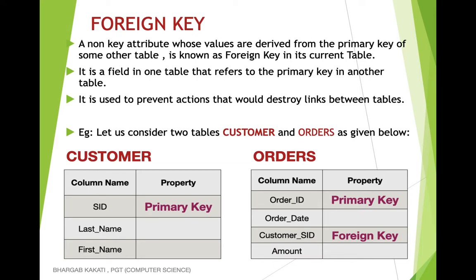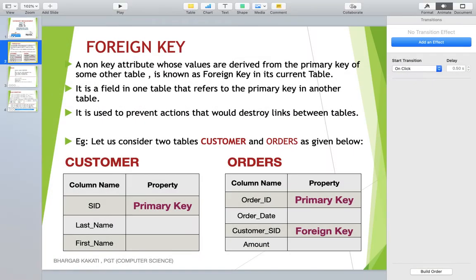The orders table has columns: order ID, order date, customer SID, and amount. Order ID is the primary key of the orders table and customer SID is the foreign key. Since customer SID is the foreign key, it is linked to the SID of the customer table — whatever values we enter for SID in the customer table, the same values should be entered in customer SID of the orders table. Now let us create a database called 'shop' containing these two tables.